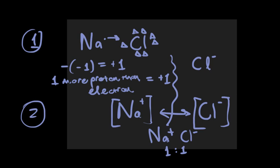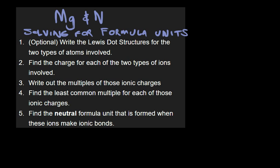There are other ratios that are going to be more complex, though. So that is what we mean by ionic bonding. Let's go ahead and see how to solve for these formula units for more complex ratios. Here are some steps for solving for formula units.